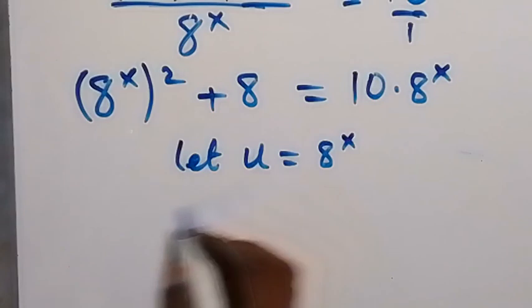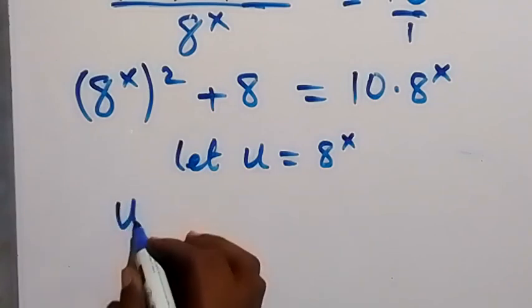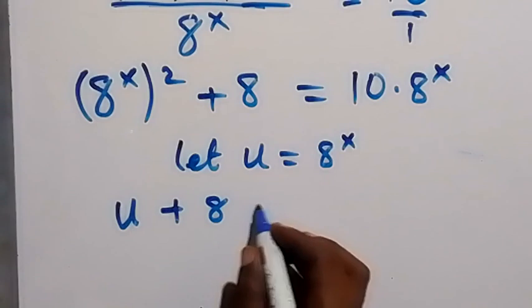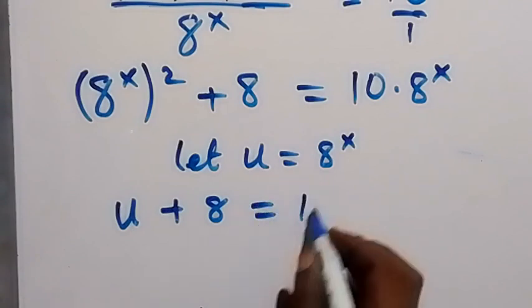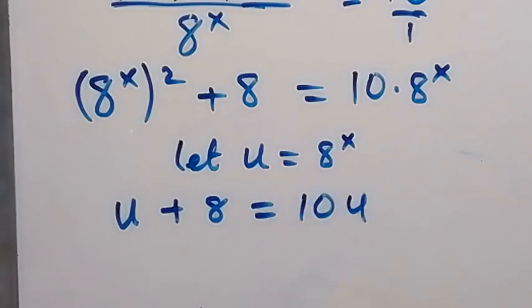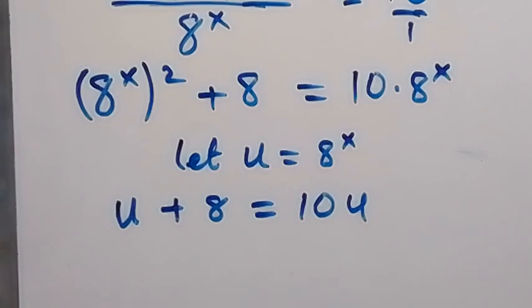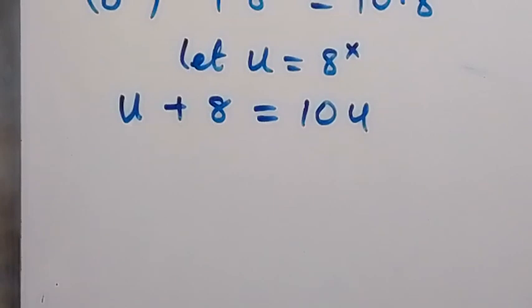Then this equation can be written as u plus 8 equals to 10u. Then from here we can bring 10u to this side to form an equation. And here we are going to have u